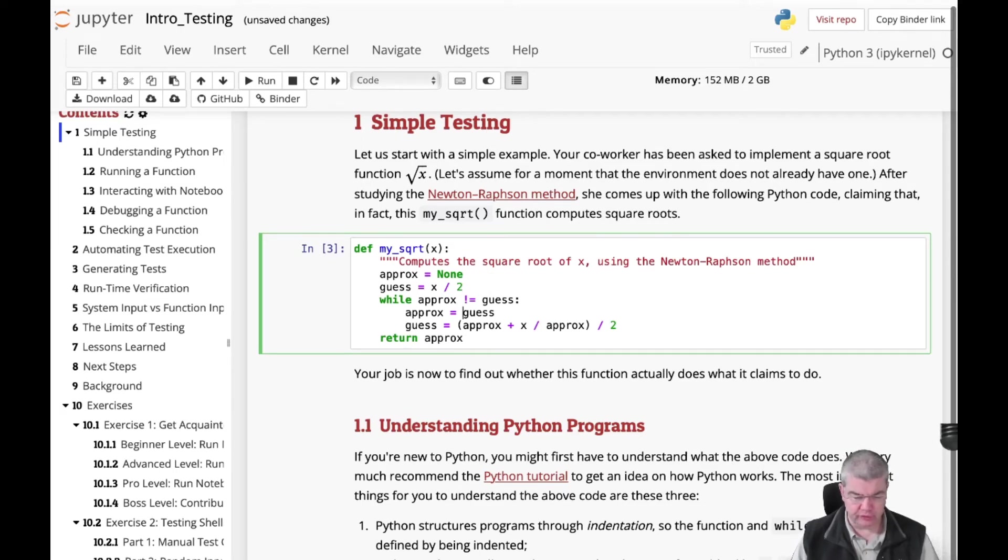So we could for instance change the code in here. Or we can swap whatever. I have no idea what happens if we change the 2 in the code here to 3. What I'm going to tell you is that this may no longer become a square root function at this point.